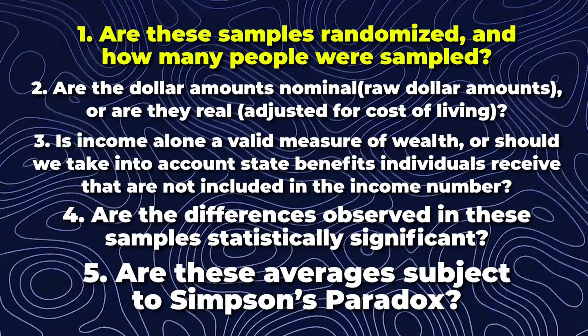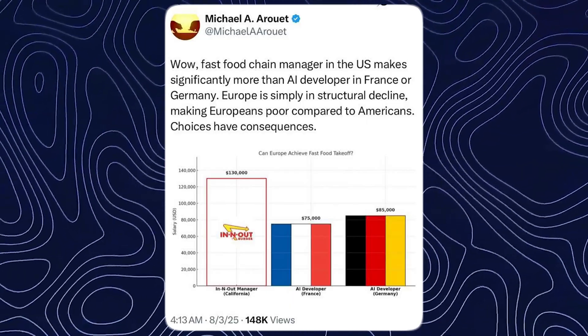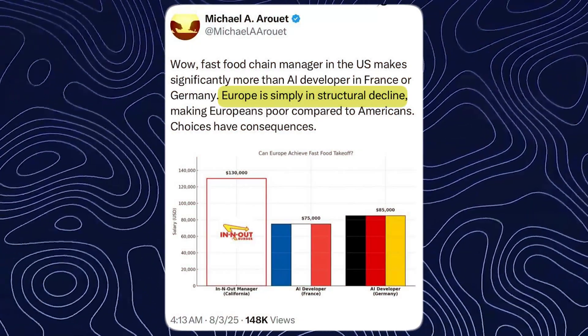For question number one, randomization simply refers to how the samples were collected. Notice the weird comparison here: the poster picked out a specific role at a specific company in a specific state and compared it to a general role in two different countries. This is bizarre and clearly biased. If we truly wanted a representative and accurate sampling to compare true salaries, we wouldn't simply compare the salary of In-N-Out managers in California, where the cost of living and therefore salaries are higher than usual. We would instead compare the average salary of a fast food restaurant manager across the entire United States to AI developers across those respective countries.